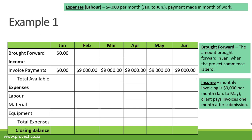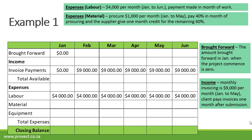On the expense side for labor, it's $4,000 per month and payment is made in the month of work — therefore from January to June, the payment is $4,000 per month. For material, we procure $1,000 worth of material per month from January to May. We pay 40% in the month of procuring and the supplier gives one month credit for the remaining 60%. In January we only need to pay $400. In February we pay the remaining $600 plus $400 for procuring in February — that's $1,000. The same applies for March, April, and May. In June, we only pay the $600 credit from May.